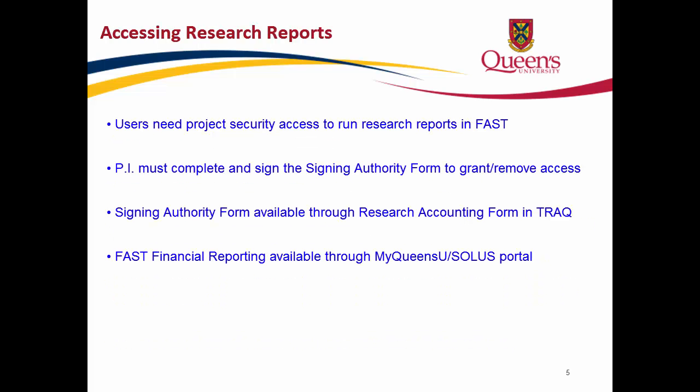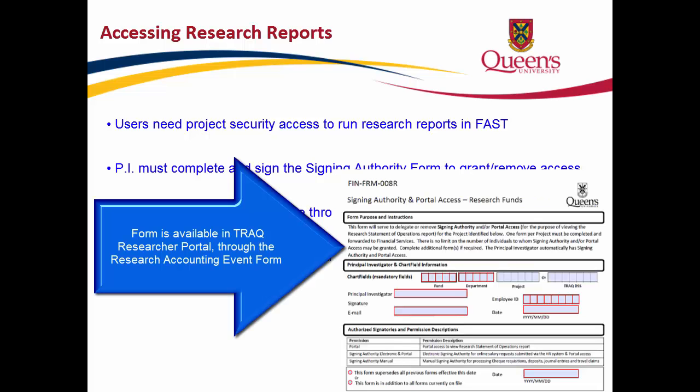I will now show you how to access your research reports. To run research reports in FAST, users are required to have project security access. To add or remove access, the principal investigator must complete and sign the Signing Authority and Portal Access Research Funds form, available in the TRAC Researcher Portal through the Research Accounting Event form.